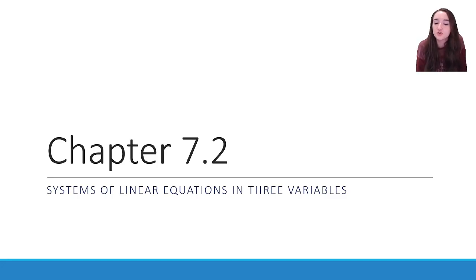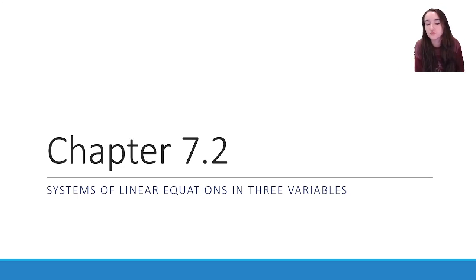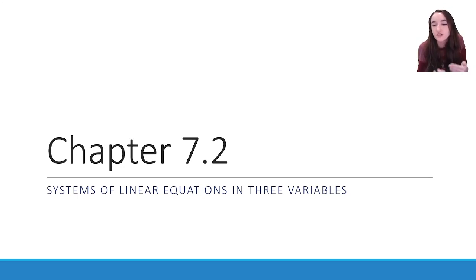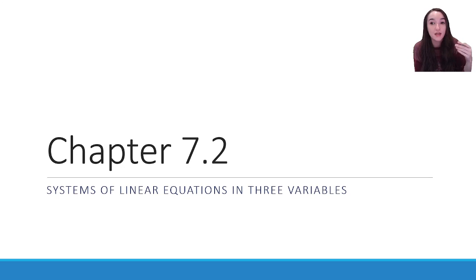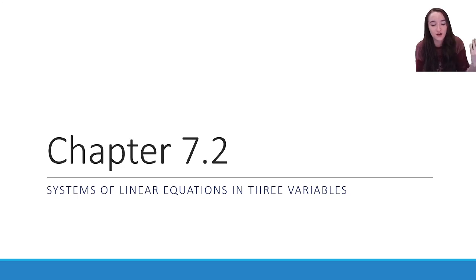Chapter 7.2: Systems of Linear Equations in Three Variables. You've been introduced to systems of linear equations in two variables in the past, whether in an algebra course here or in previous algebra courses. We are now going to expand upon that into systems of linear equations in three variables. So instead of just x and y, we'll now have z.